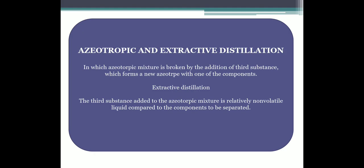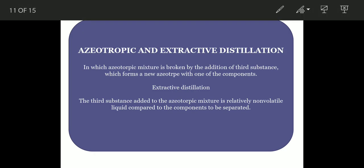Azeotropic distillation is a distillation method in which the azeotropic mixture is broken by the addition of a third substance which forms a new azeotrope with one of the components. Suppose you have components A and B whose boiling point is constant — meaning both are boiling at the same temperature.